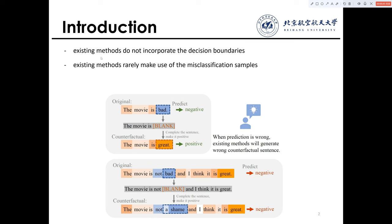Second, existing work rarely makes good use of the misclassification samples. Taking sentiment analysis as an example, if the text is 'the movie is not bad and I think it's great' but the model classifies it incorrectly as negative, the existing methods try to mask some tokens and generate sentences with target label positive, but it's hard to correct the wrong decisions.